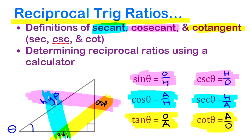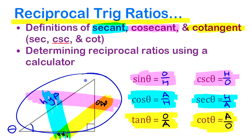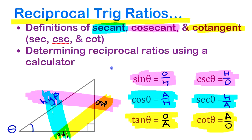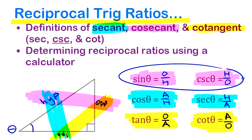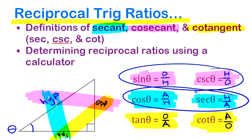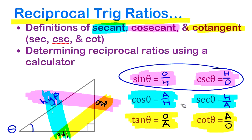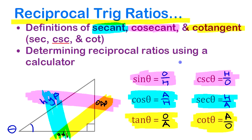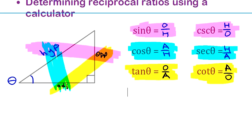Those three reciprocal relationships hold whether you're using right triangle trigonometry or circular trigonometry with angles in standard position — same thing. If you know one ratio, you know the other. Let's look at some examples right now.